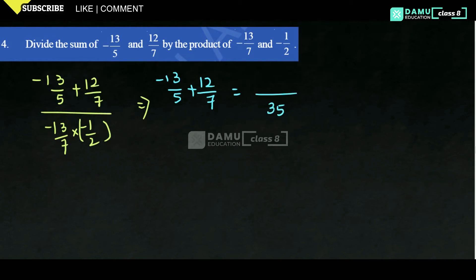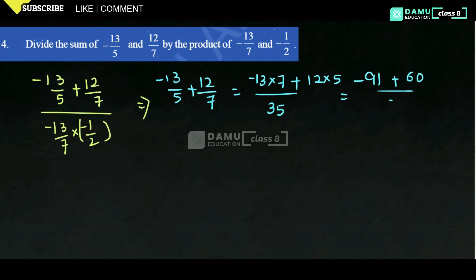We multiply: minus 13 into 7 plus 12 into 5, because we need to multiply with 5 and 7 respectively to get 35. So 13 sevens are 91: minus 91 plus 60 by 35. That gives minus 31 by 35.